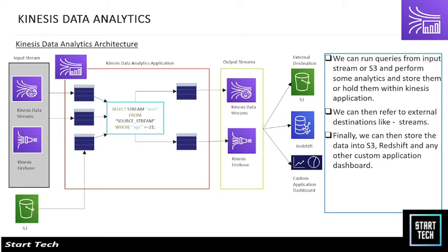Kinesis Data Analytics takes input from Data Stream, Firehose, or S3. We create a Kinesis Data Analytics application through which we can create a stream and, using standard SQL, analyze the data and store results into Data Stream, Firehose, or external destinations like S3, Redshift, or a final dashboard. It is a very useful service for business analysts or data analytics users who want to do ad hoc querying on streaming data.